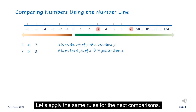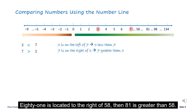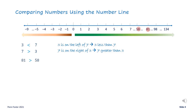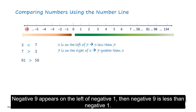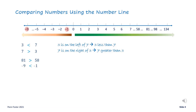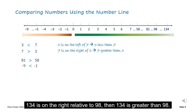Let's apply the same rules for the next comparisons. 81 is located to the right of 58, so 81 is greater than 58. Negative 9 appears on the left of negative 1, so negative 9 is less than negative 1. 134 is on the right relative to 98, so 134 is greater than 98.